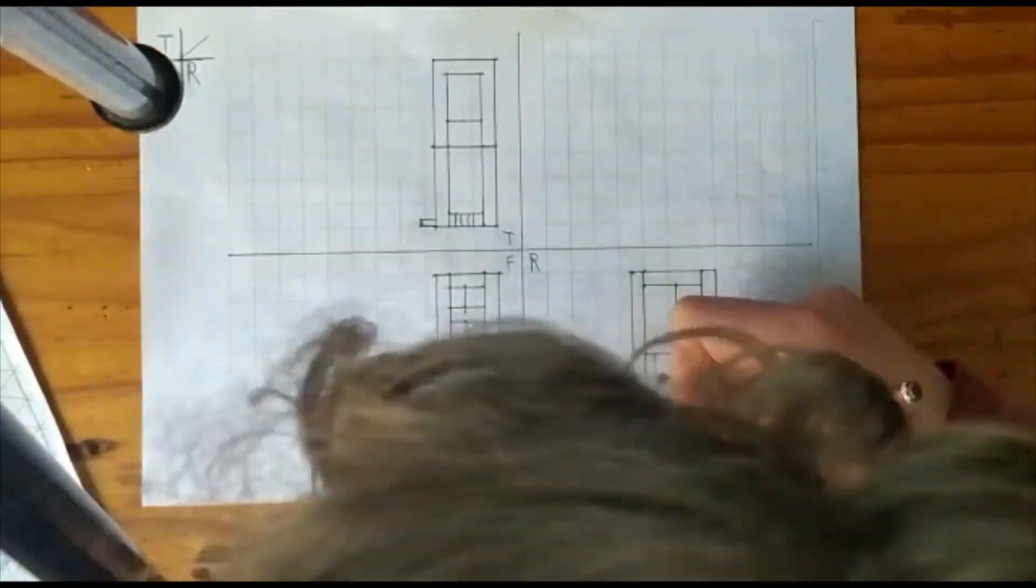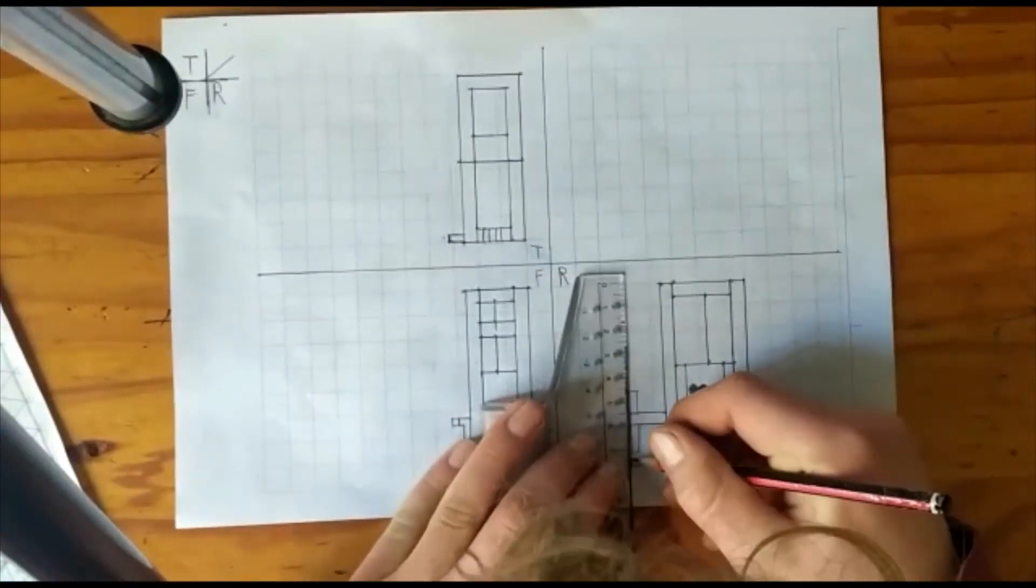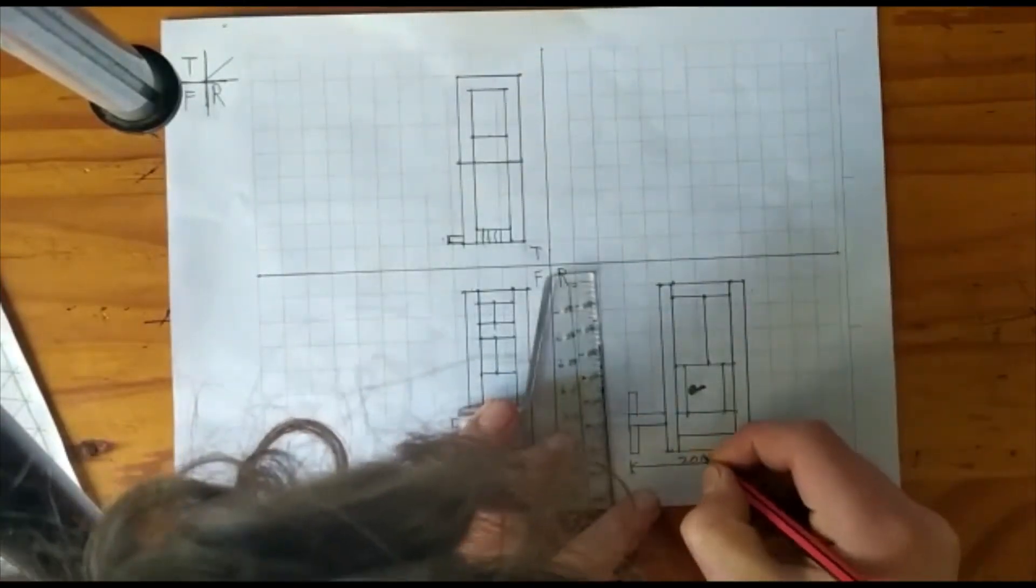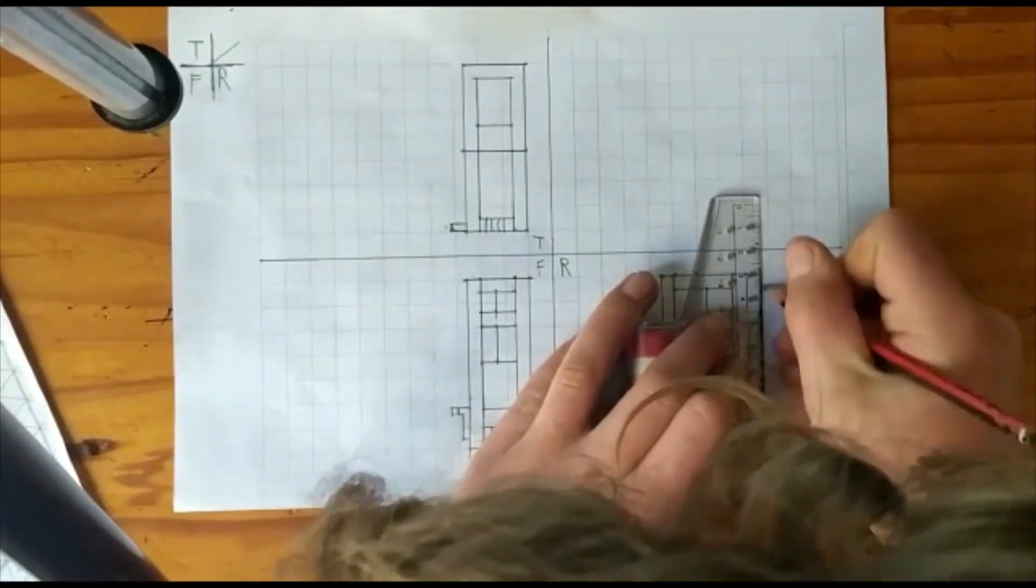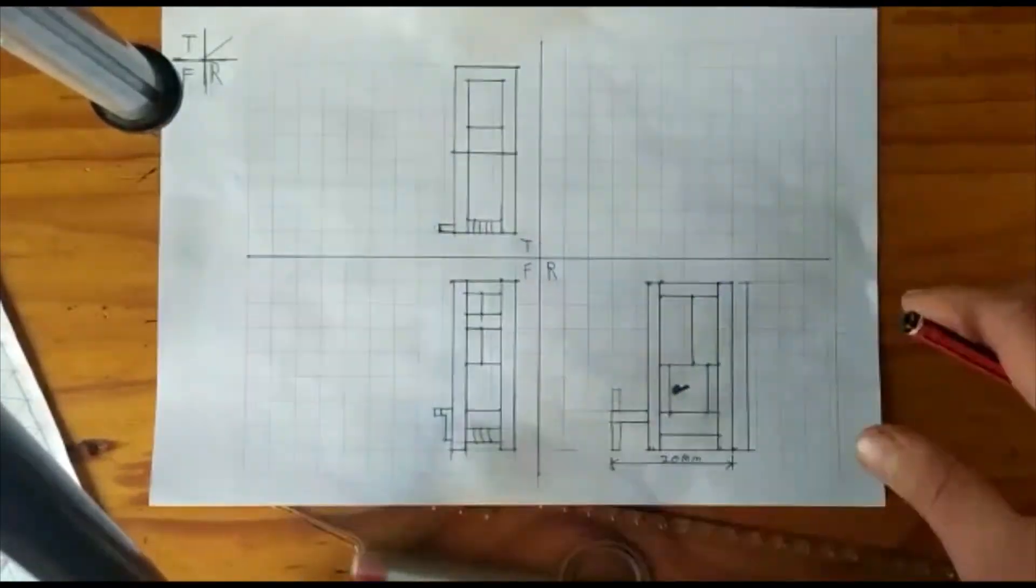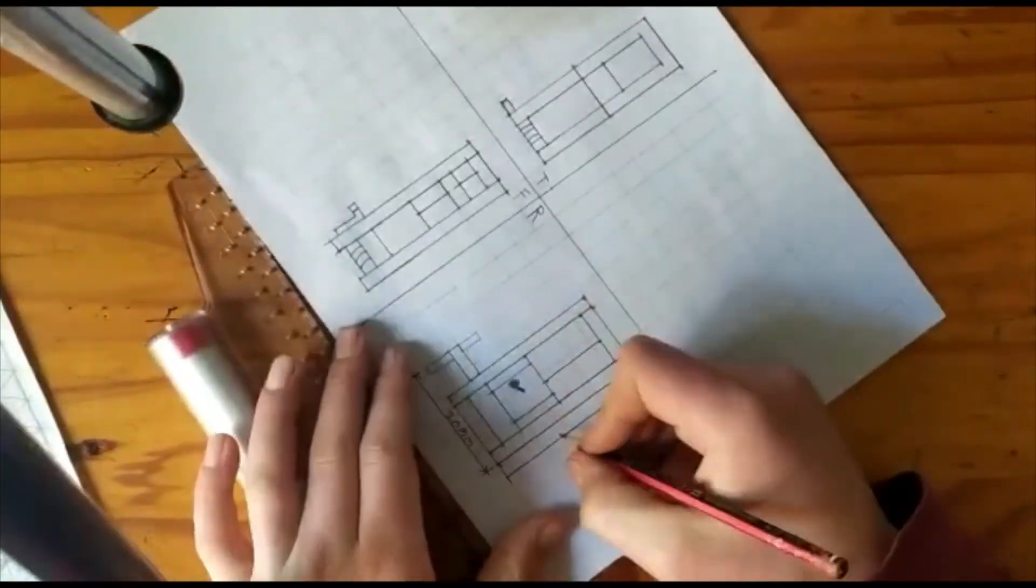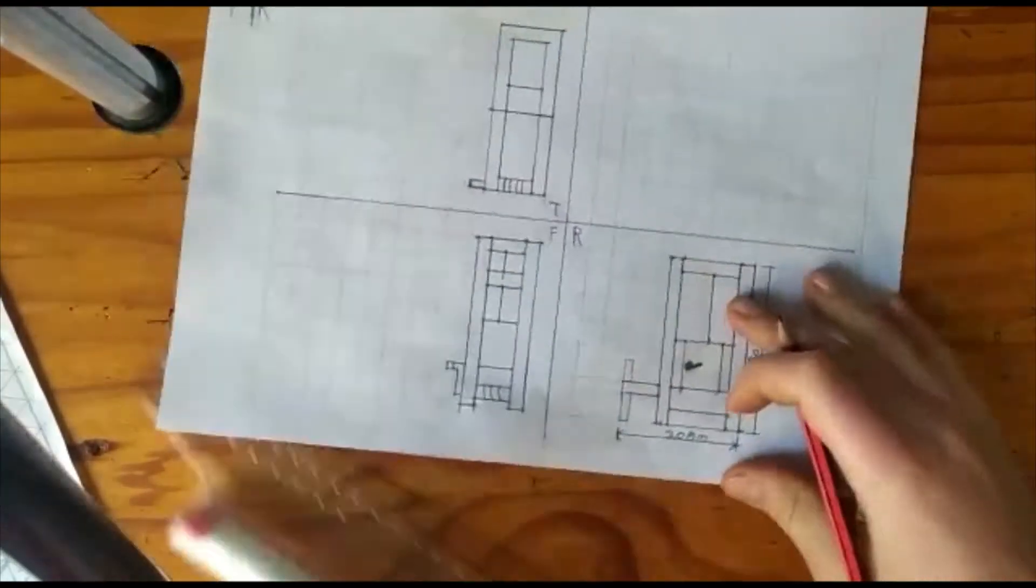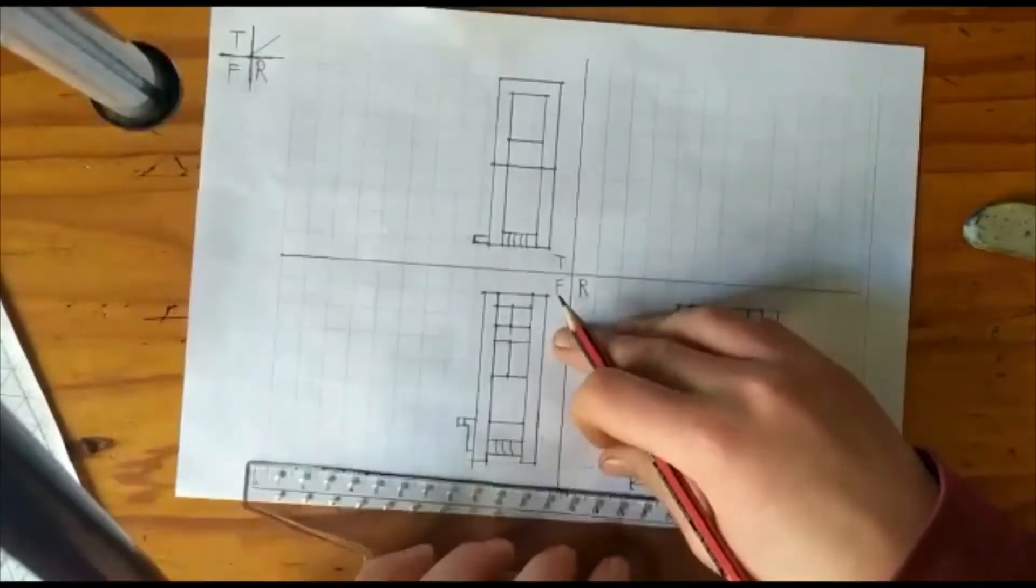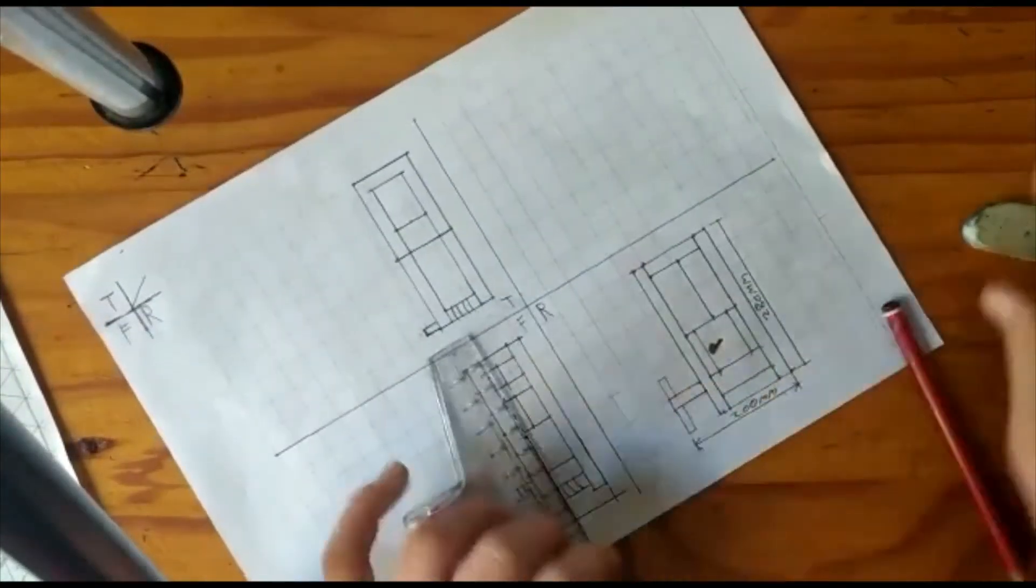When doing an orthographic drawing, you should always put your symbol of whether you're doing third angle orthographic or first angle orthographic projection on your drawing. You should also include your scale. And when you're drawing the dimensions, the measurement must be written on the side closest to the drawing.